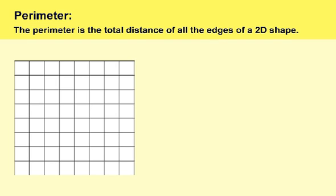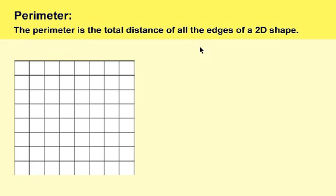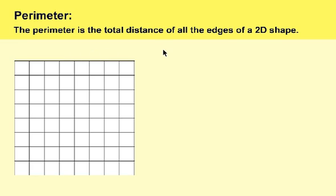In this video I'm going to be showing you how to find the perimeter of a shape by using a grid. We know that perimeter is the total distance of all the edges of a 2D shape. Now, in this case we have a grid and we're going to be using it to figure out the perimeter of a shape. Normally you would have the numbers of all the sides, but in this case we won't — we're just going to be using the grid.